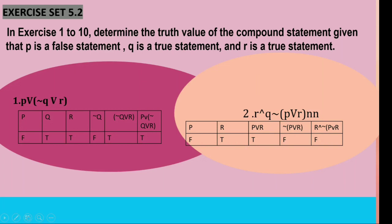For number 1, P is false, Q is true, and R is true. First, we determine the negation of Q. Since Q is true, negation Q is false. Then we determine the whole statement inside the parenthesis: negation Q disjunction with R. Based on the truth table, negation Q is false and R is true, which results in true.